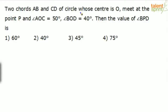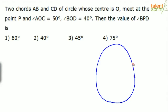Two chords AB and CD of a circle whose center is O meet at the point P. Angle AOC equals 50 degrees, angle BOD equals 40 degrees. Then the value of angle BPD is — so taking the circle again, it does not look like a circle but we can consider it.